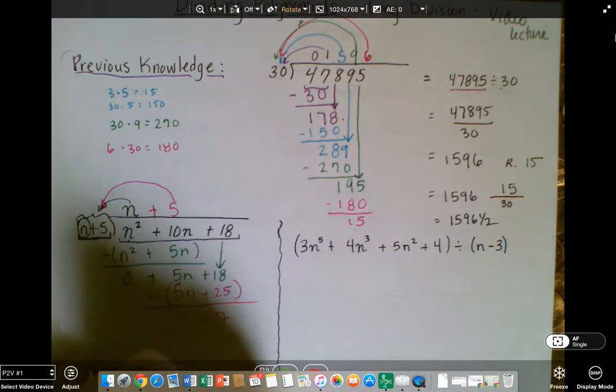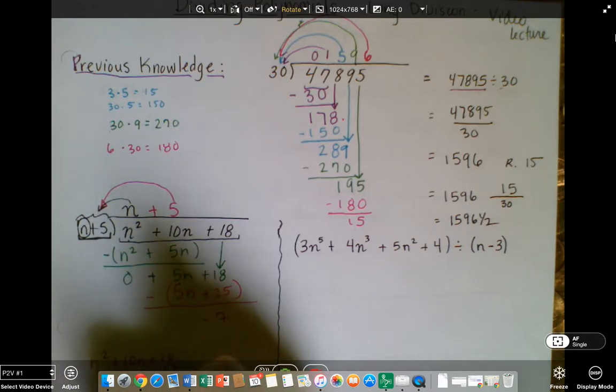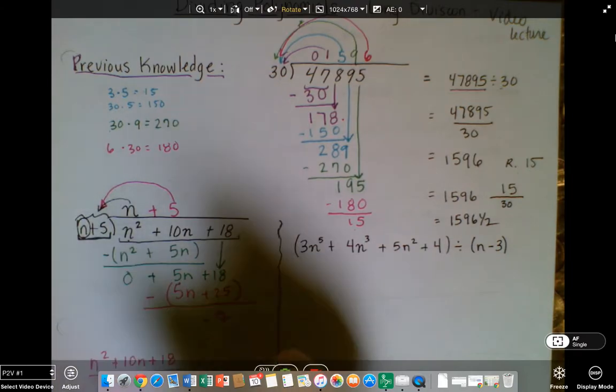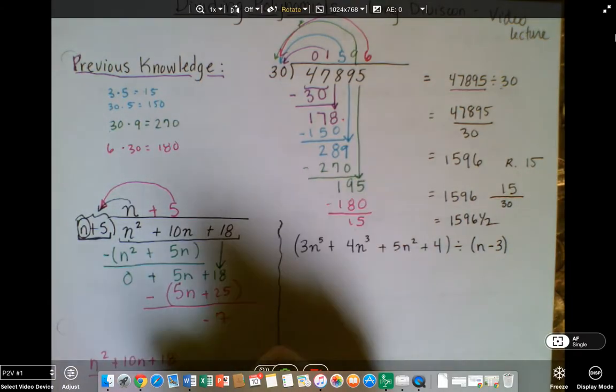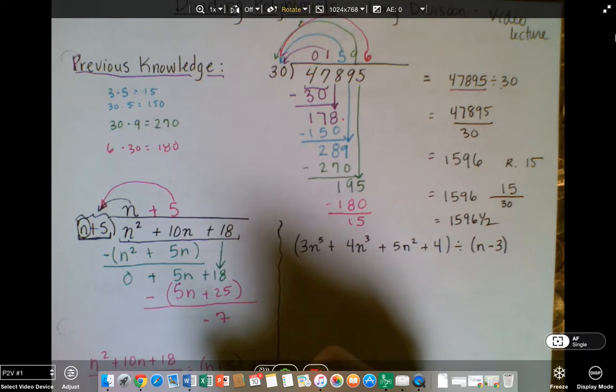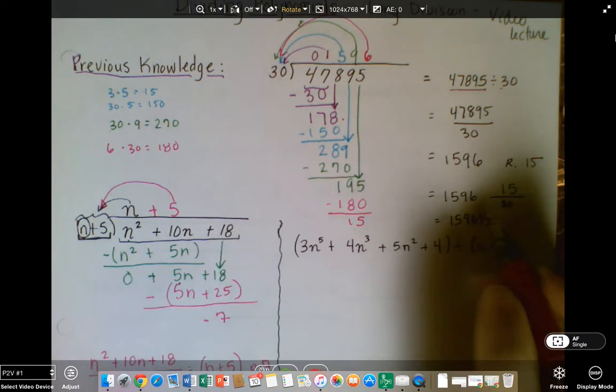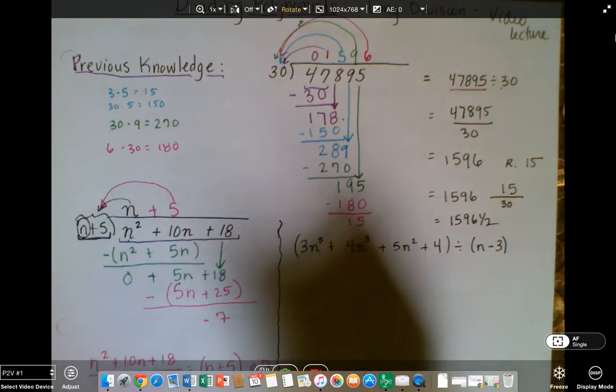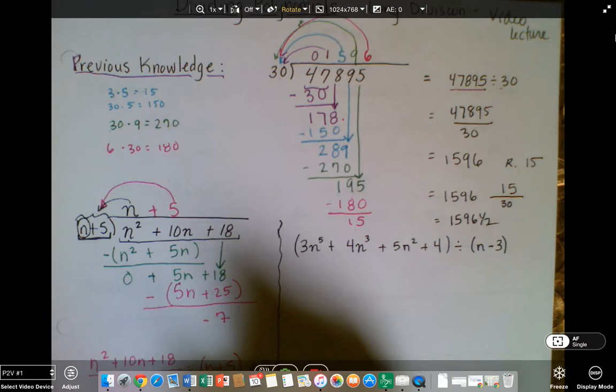So n squared plus 10n plus 18 divided by n plus 5 is n plus 5 remainder 7. Or, just like we wrote it over here, n plus 5 and 7 over n plus 5.